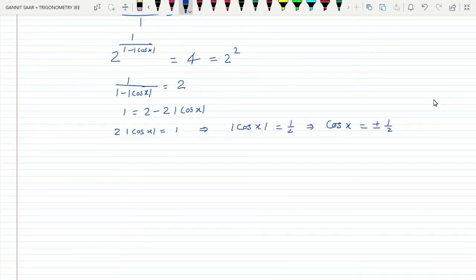When cos theta equals cos alpha, the general solution is x equals 2n pi plus or minus alpha.